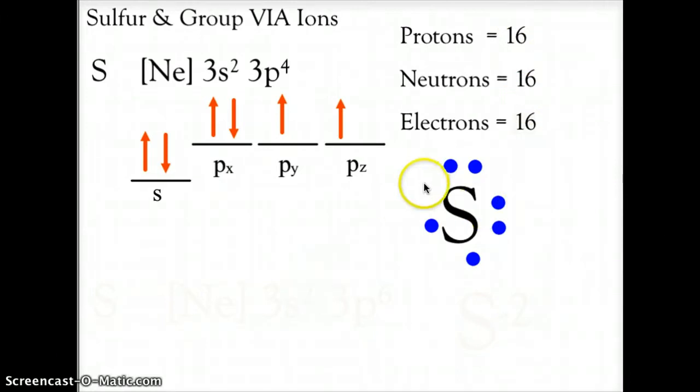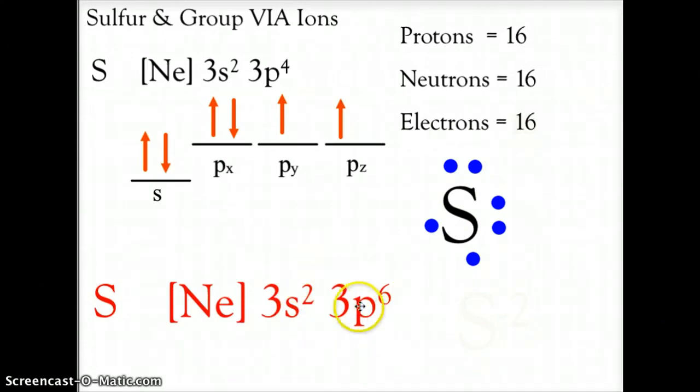Again, would it be easier to fill these 2 empty spaces in the Lewis dot diagram, or would it be easier to give up those 6? Well, sulfur will actually pick up 2, taking on 3s² 3p⁶, stable, just like argon, and this gives it a negative 2 charge, because now we have 18 electrons, 2 more electrons than protons, giving us the negative 2 charge.